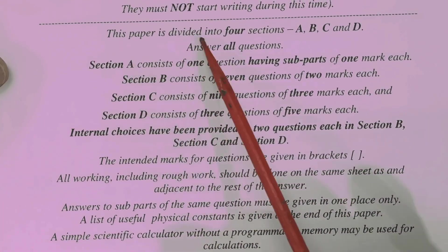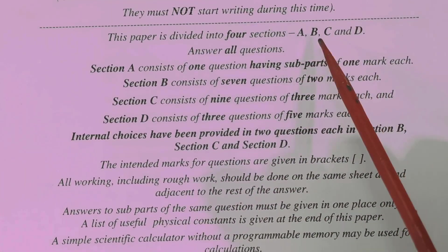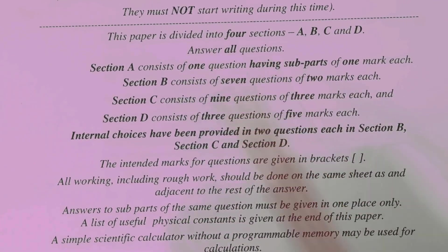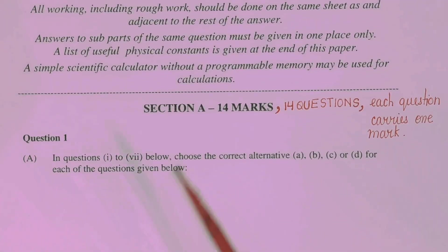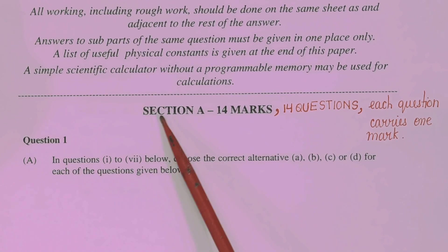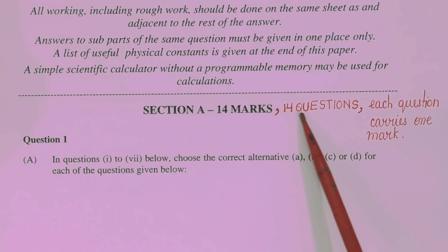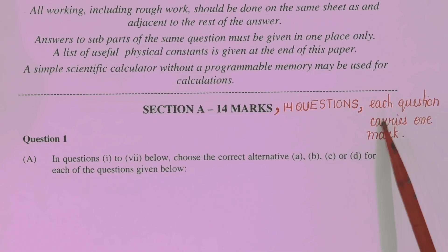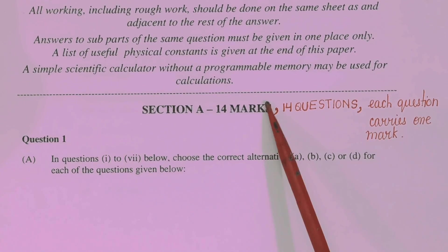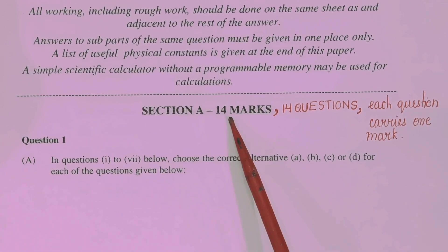The paper is divided into 4 sections A, B, C and D and you have to answer all the questions. Now observe the question paper carefully. In section A we are having 14 questions and each question carries 1 mark. So total section A carries 14 marks.